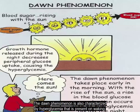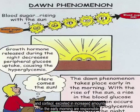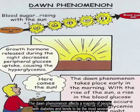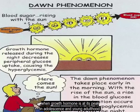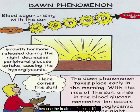The dawn phenomenon is also characterized by hyperglycemia present on awakening. It has been suggested that two counter-regulatory hormones — growth hormone and cortisol — secreted in increased amounts in the early morning are responsible. The dawn phenomenon affects a majority of people with diabetes and tends to be most severe when growth hormone is at its peak in adolescence and young adulthood. Careful assessment is required to document the Somogyi effect or dawn phenomenon because the treatment for each differs.